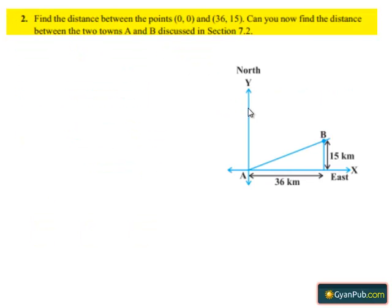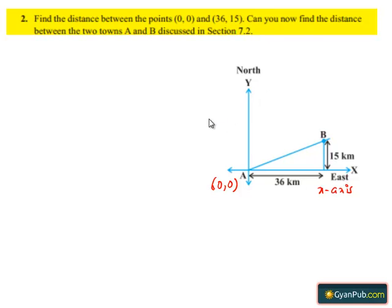Coming to the second part of the question, we need to find the distance between the two towns A and B. Let us represent this situation graphically, with the horizontal line as the x-axis and the vertical line as the y-axis. Here, we need to find the coordinates of town B.